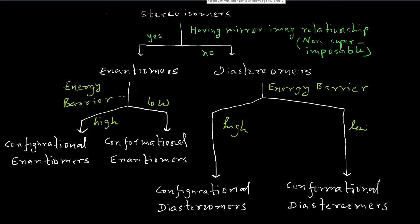If the interconversion process requires less energy — that is, the energy barrier is very low — then those enantiomers are called conformational enantiomers. If the energy barrier is very high, then those are called configurational enantiomers. I will give proper examples for each case.